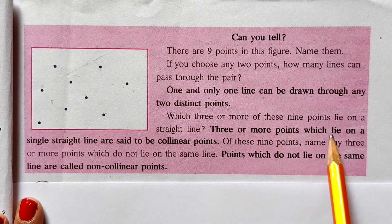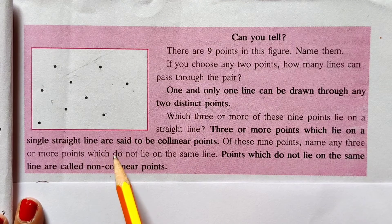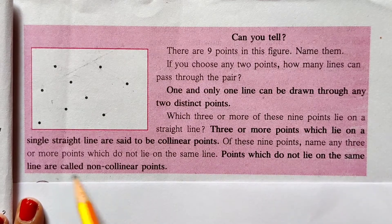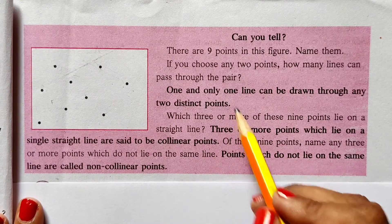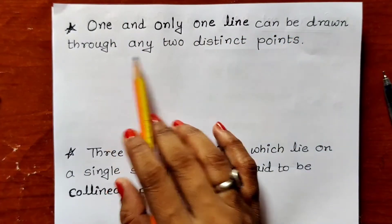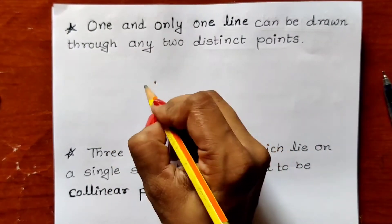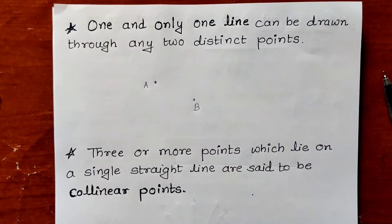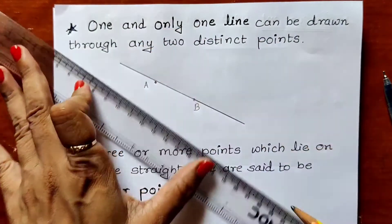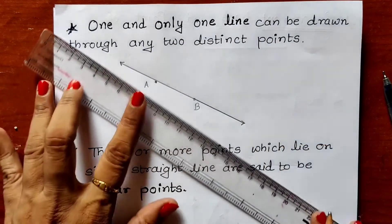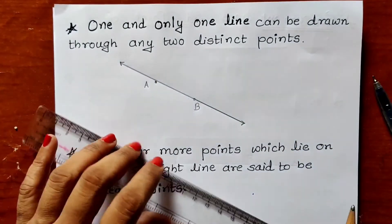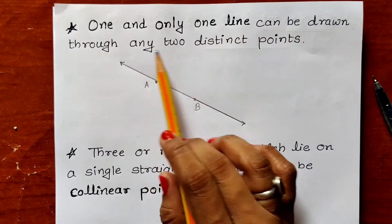When three or more points lie on the same single straight line, those points are known as collinear points. Points which do not lie on the same line are called non-collinear points. One and only one line can be drawn through any two distinct points — point A and point B are on the same line, so only one line passes through them.